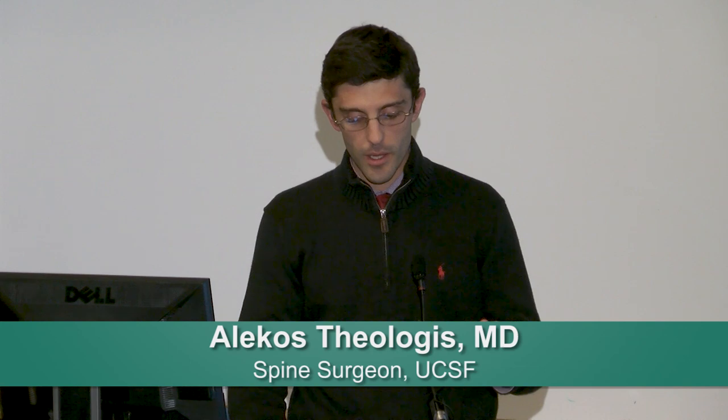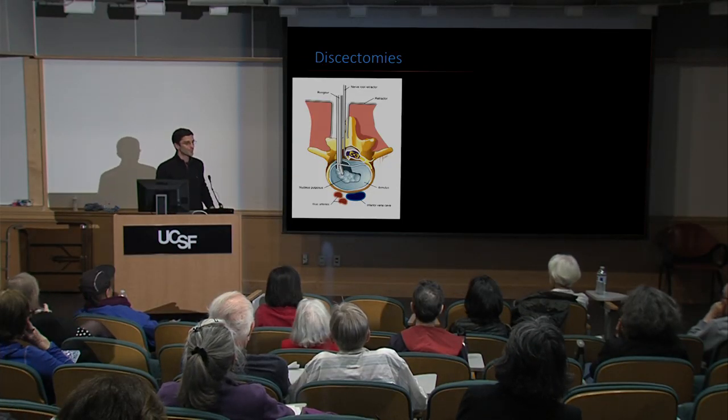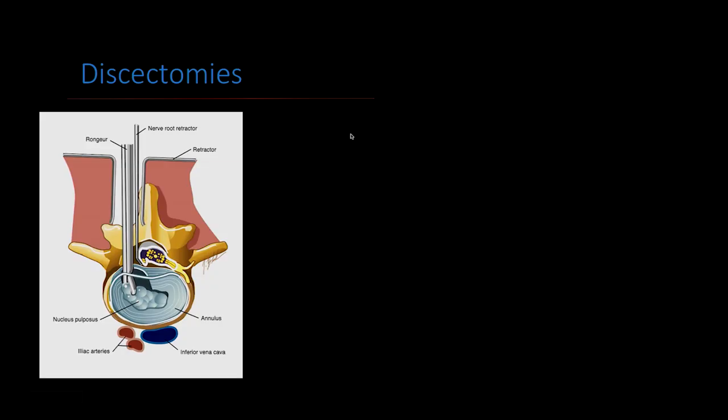If the pinching comes from a disc herniation — a portion of the disc pressing on the nerve — we do consider surgery after we've exhausted all non-operative treatment: physical therapy, anti-inflammatory medications, and injections. Discectomy is essentially going through the back part of the spine, reaching around the nerve, and taking out a piece of the disc from the front. In the lumbar spine that's the easiest way to take out the offending piece and relieve the pressure on the nerve.